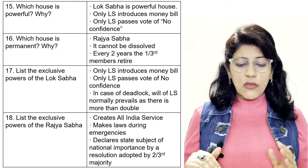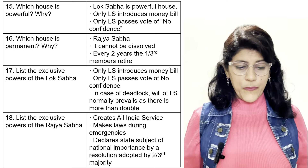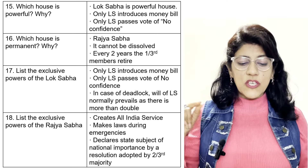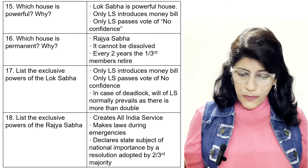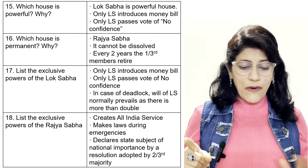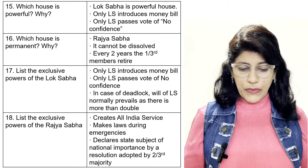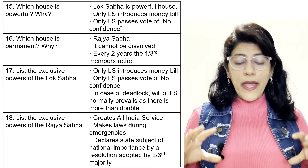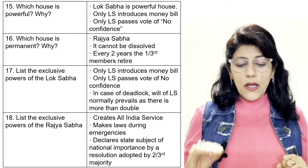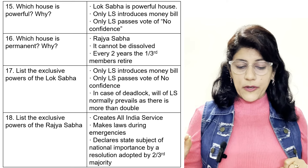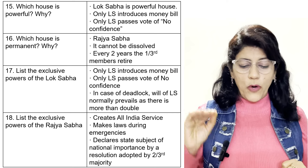Which house is powerful and why? Lok Sabha is the powerful house — only Lok Sabha introduces money bills, only Lok Sabha passes vote of no confidence. Which house is permanent and why? Rajya Sabha — it cannot be dissolved; every two years one-third of members retire. List the exclusive powers of Lok Sabha: only Lok Sabha introduces money bills, only Lok Sabha passes vote of no confidence.